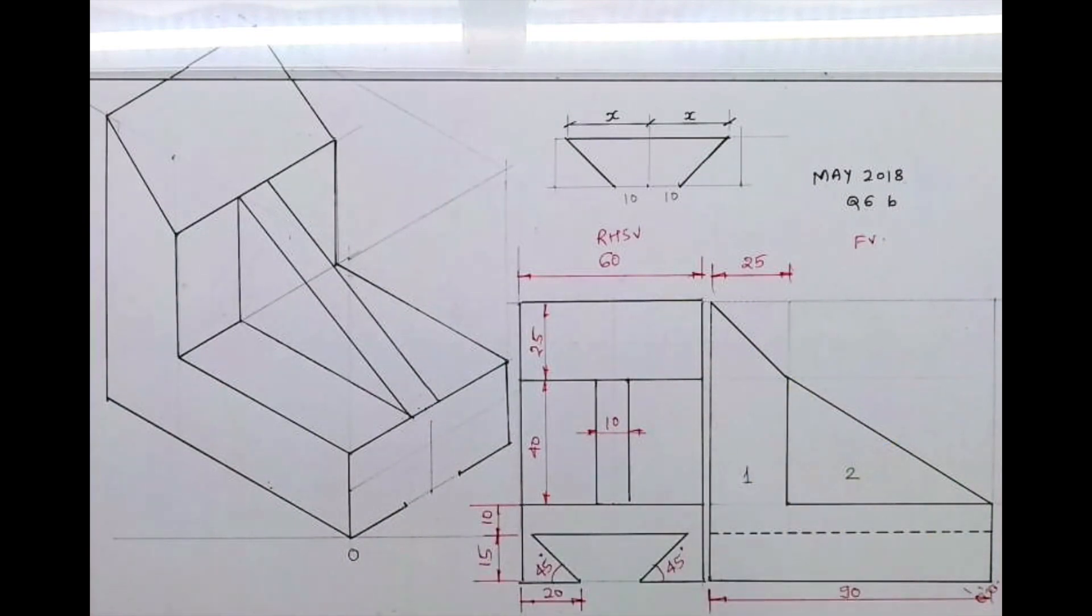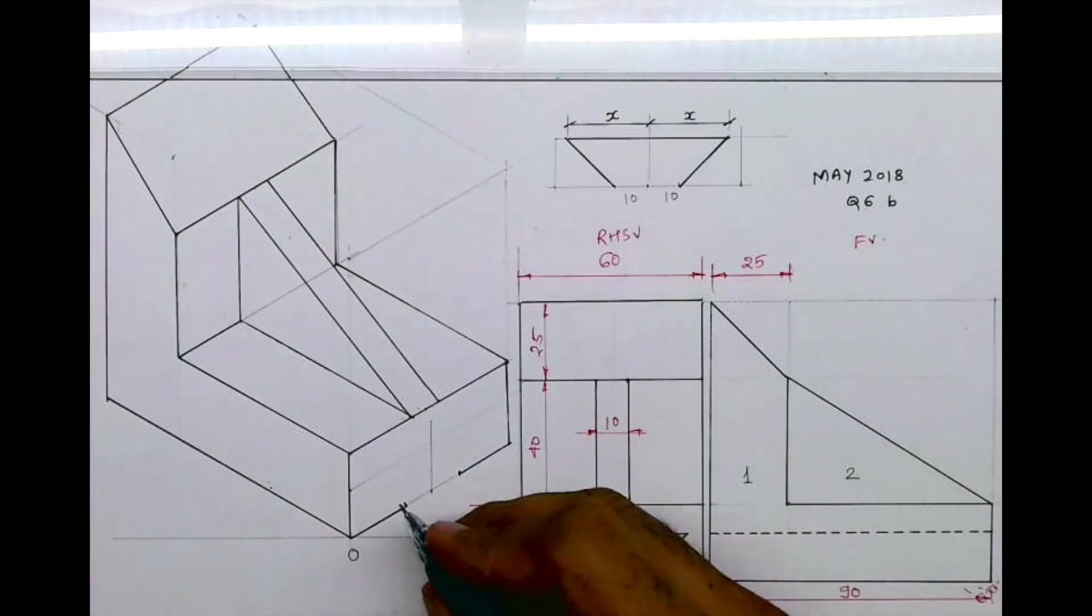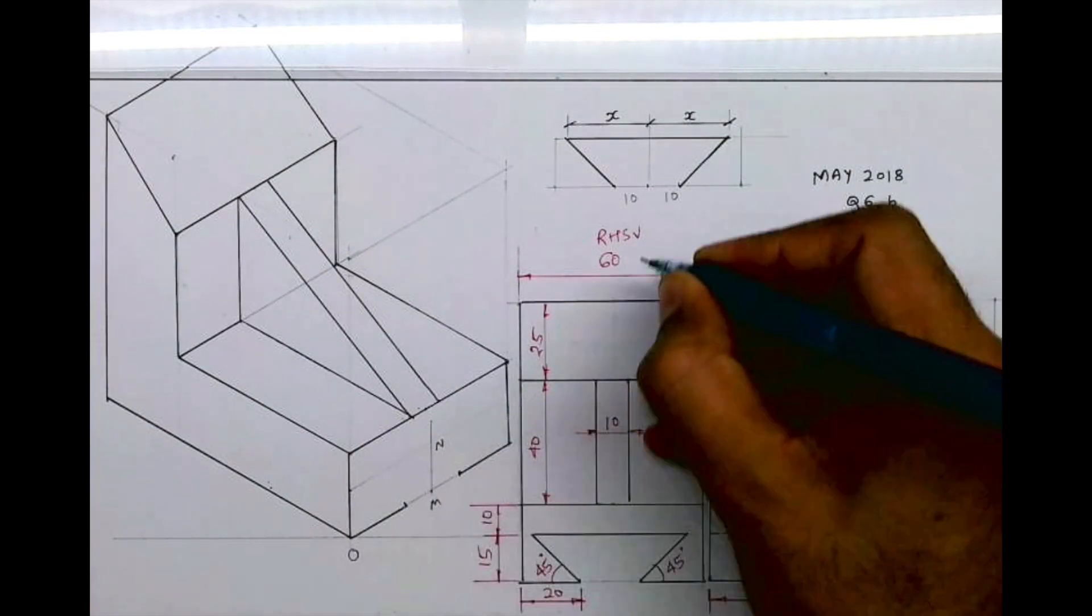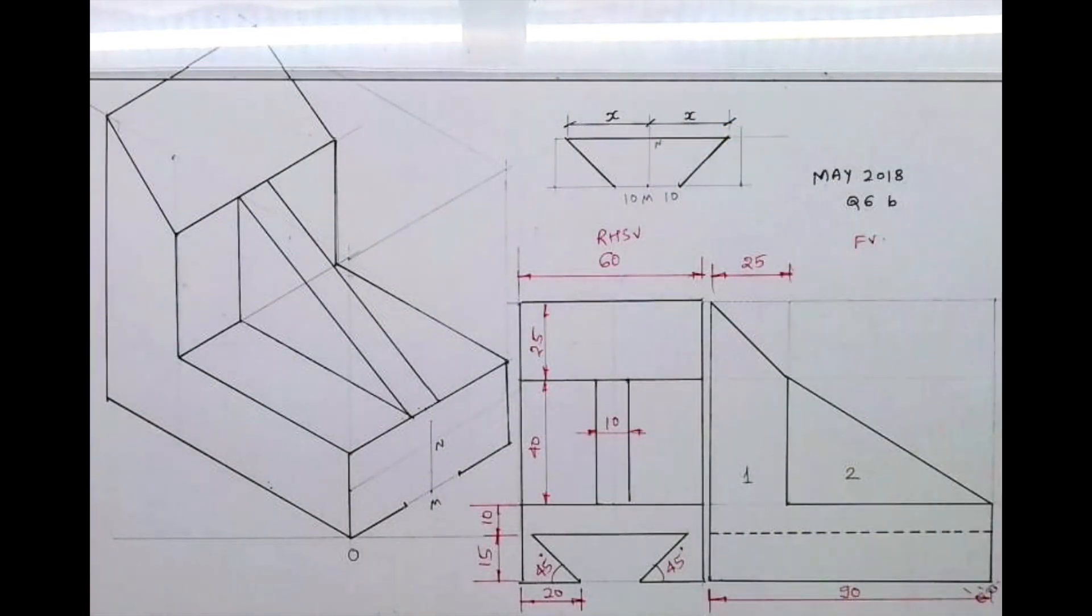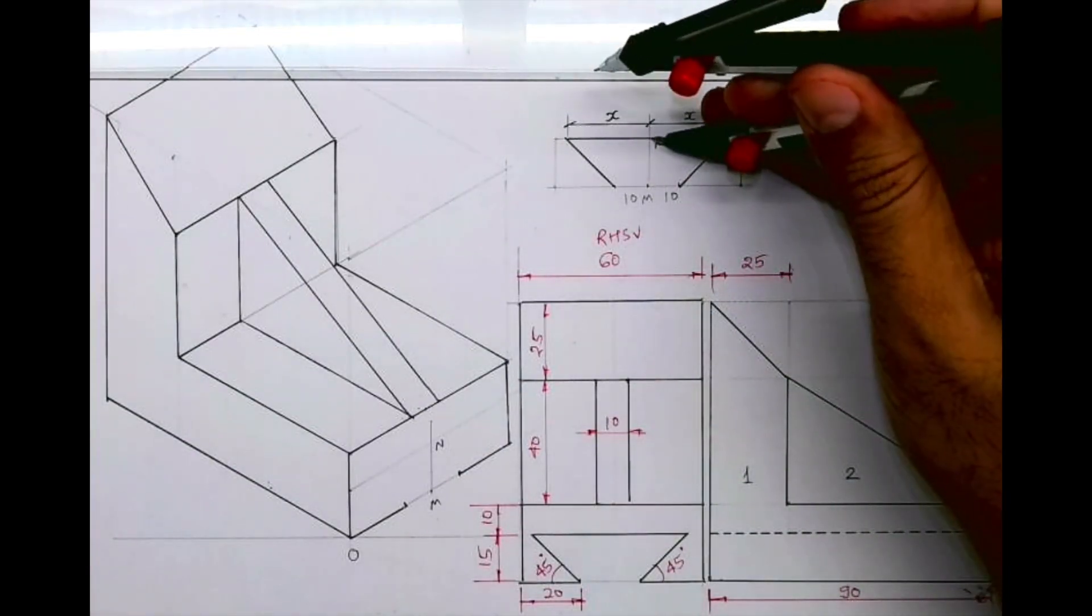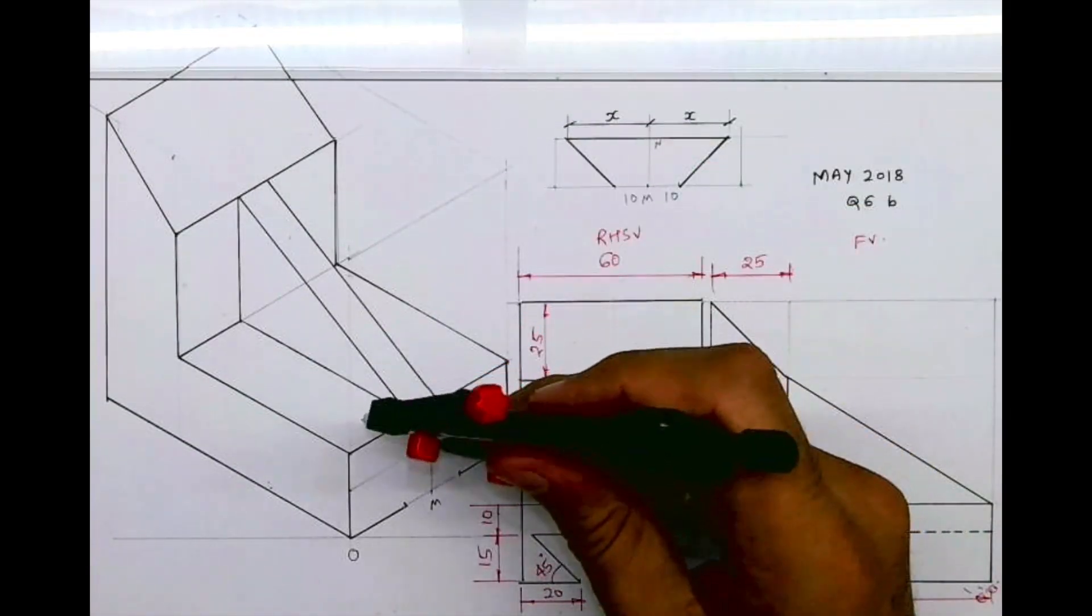Now we need to transfer x. So what we will do, we'll go up by 15. See this, from here M-N, this is M-N. So now we need to take distance x and we need to cut.